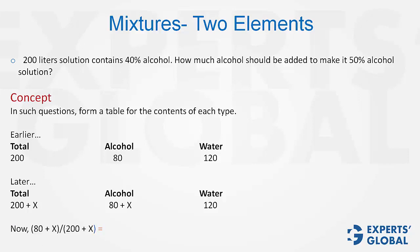Or, mathematically, you can do it this way: (80 + x) / (200 + x) = 50%. Solve it to get x = 40. That is how you solve these questions.